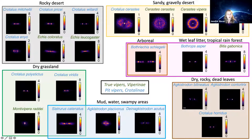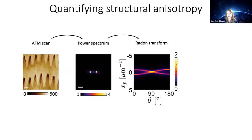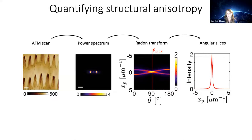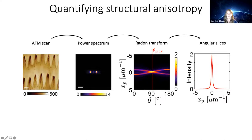We quantified this structure by starting with the AFM scan, taking the power spectrum, then applying the Radon transform to get the angular dependence of that power spectrum. We identified the angle at which intensity is maximum — theta max, roughly 90 degrees — and took an intensity slice through that part of the Radon transform, yielding a very sharply peaked intensity profile. We then looked at the slice 90 degrees away, which looked extremely different.